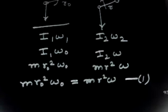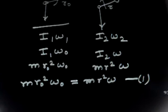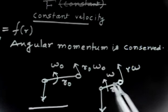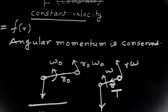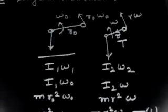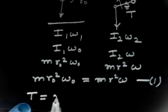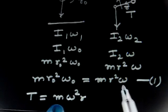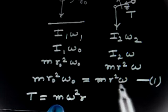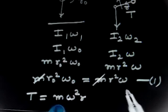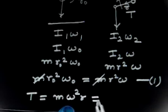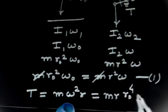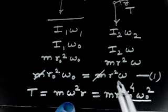Now we find tension. At any instant the object moves in a circular path, so tension equals mass times centripetal acceleration: T = mv²/r = mω²r. From equation 1, ω = r₀²ω₀/r². Plugging this in: T = m·r·(r₀²ω₀/r²)² = m·r·r₀⁴ω₀²/r⁴.